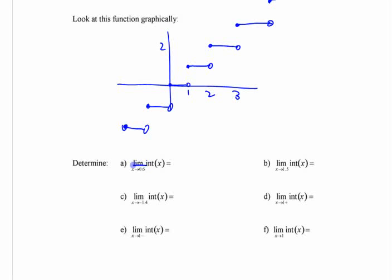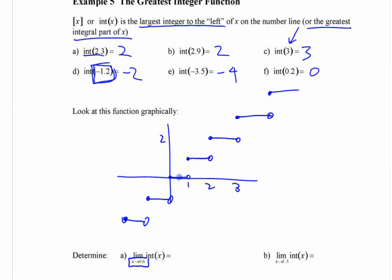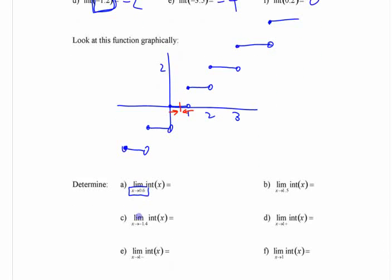If you ask what the limit is as you approach 0.6 of that function: as you approach 0.6 from either side, does that limit exist? It does. What's the greatest integer in 0.6? It's 0. That limit exists because it's the same from the left and the right.